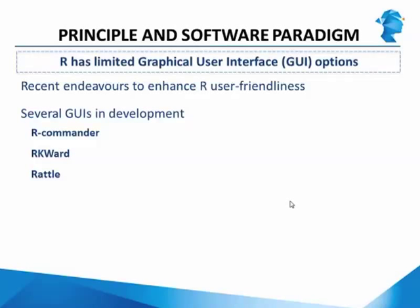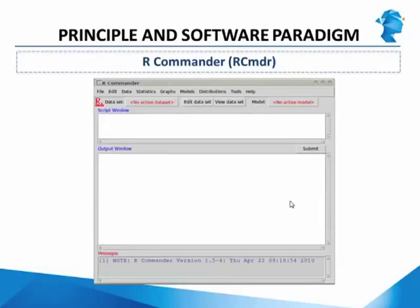There are GUIs like RCommander, RKWARD, and RATTLE which are fairly popular. RCommander, or the R-CMDR package, is one of the most sophisticated R GUIs. Its features are still relatively limited compared to SAS or SPSS GUIs. So, while this is the most sophisticated R GUI, if you compare it with the GUIs offered by SAS or SPSS — the commercial tools — it is still very limited. It consists of some additions to the basic R GUI, which we will describe in more detail in a few slides.